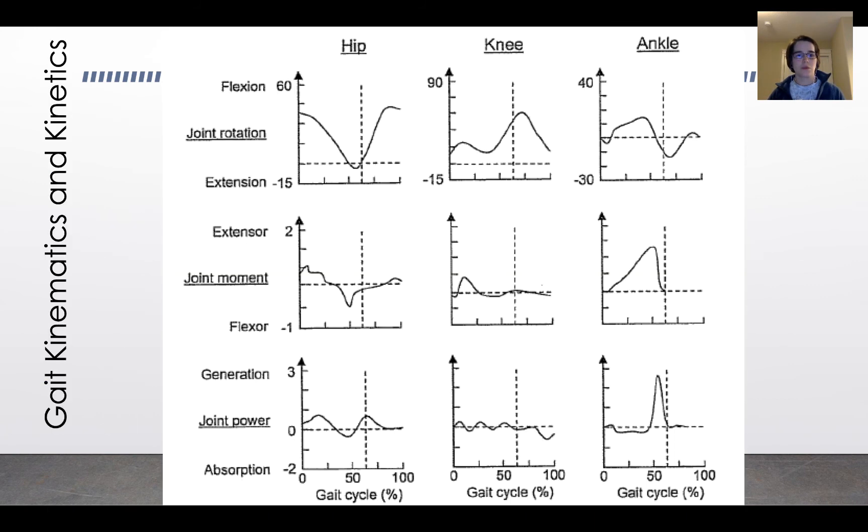Ultimately, your goal is to be able to create plots of the joint kinematics. So this top row here is joint rotation. That would be angular position for the hip, the knee, and the ankle for one gait cycle. And then we'll talk more as we move further in about calculating joint moments. So the moment at the knee or the hip like we did in the leg lift example manually by hand when we were talking about statics and how that applies to the human body.